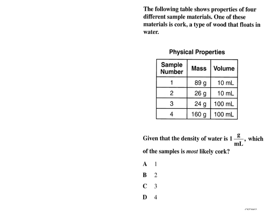Now let's take a look at a question like you might see from the state test. The question reads as follows: The following table shows properties of four different sample materials. One of these materials is cork, a type of wood that floats on water or in water.